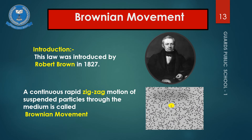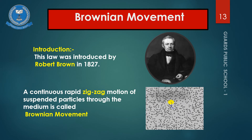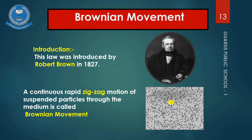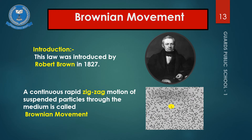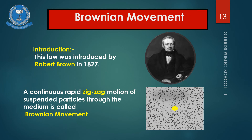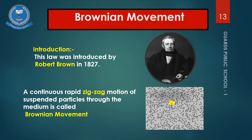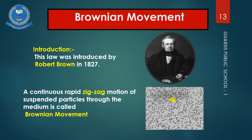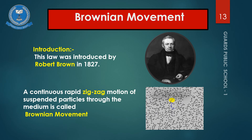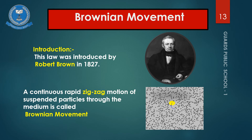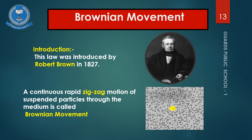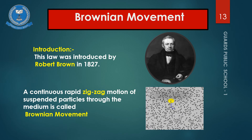In summary, Brownian movement occurs because water molecules are always moving and collide with suspended particles from all sides, pushing them in different directions. When water molecules hit from one side and then another, the particle moves in a zigzag pattern. This continuous irregular motion is called Brownian movement.